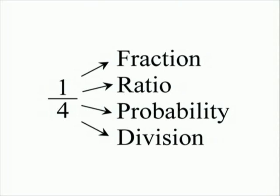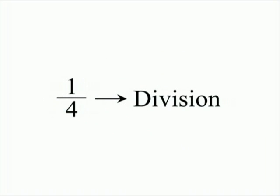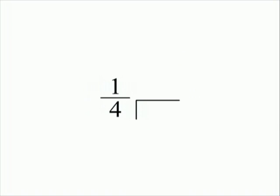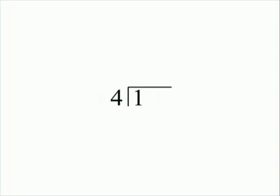Let's say I want to change this fraction into a decimal. That means I have to do some arithmetic operation, so I have to interpret this as a division problem: one divided by four. Write the division house alongside the bottom, and imagine tilting the fraction so that the top number slides off into the division house. That way you'll always remember which number goes outside and which one goes inside — it will never be the other way around.